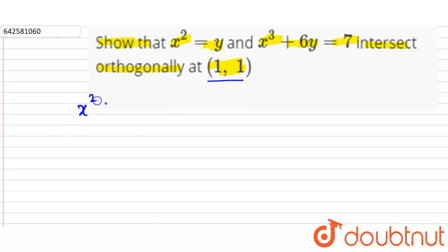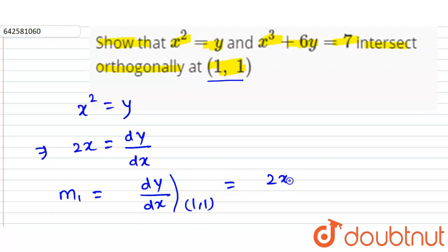What is the first curve? x squared equals y. We have to differentiate this with respect to x. This is 2x equals dy by dx. So dy by dx is 2x. Now, what is m1? m1 is dy by dx at (1,1). So this equals 2x, which is 2 times 1 equals 2. So this is our m1.